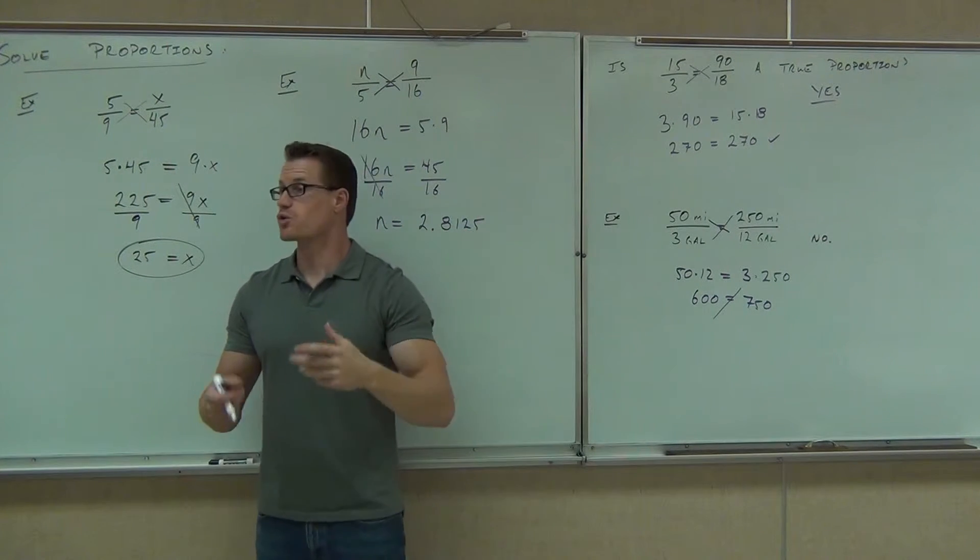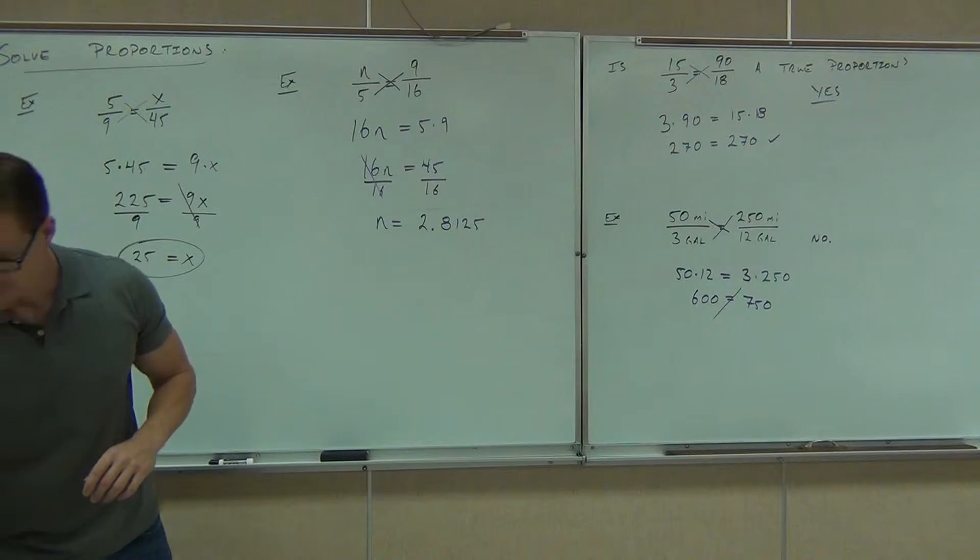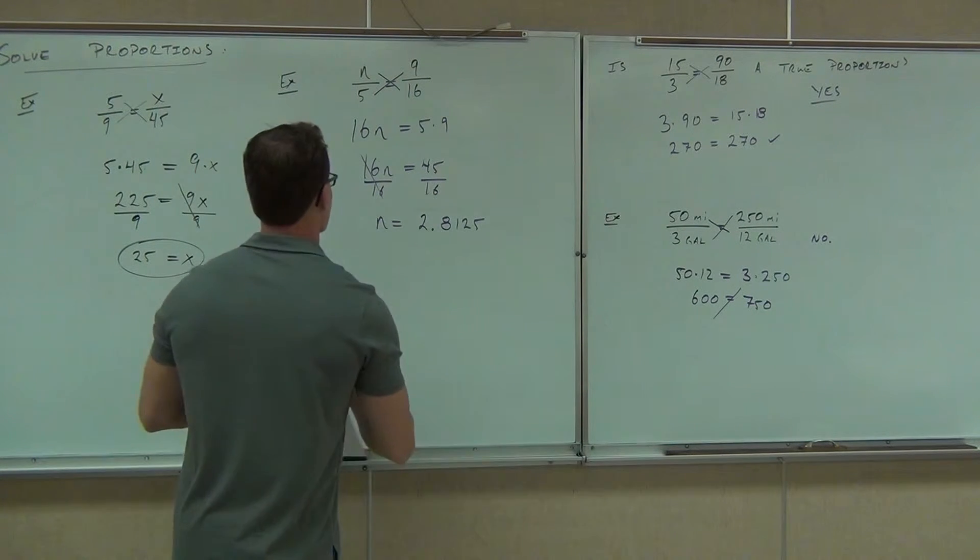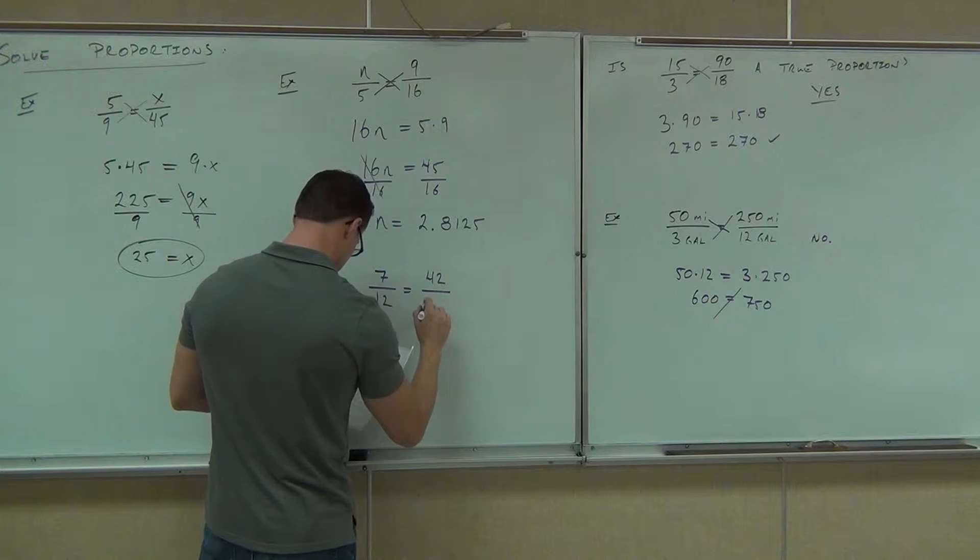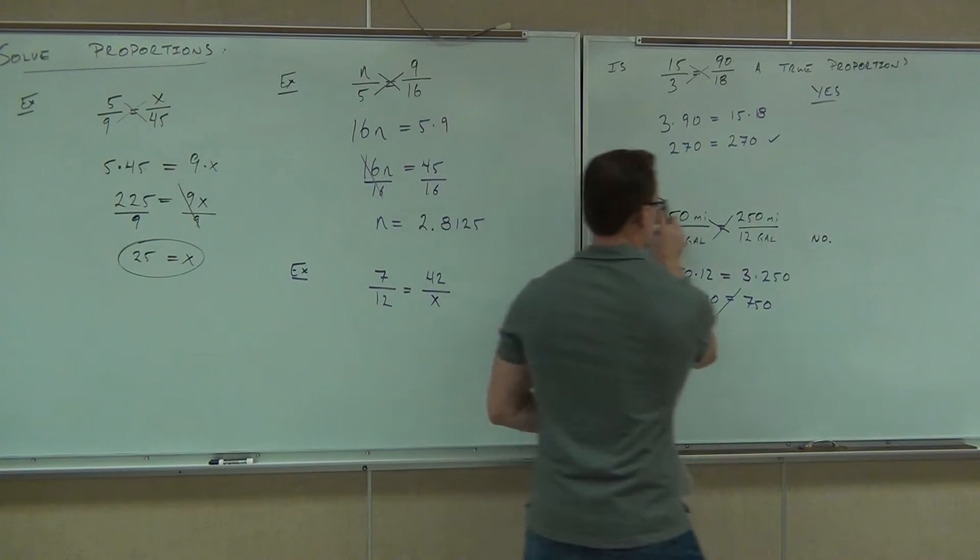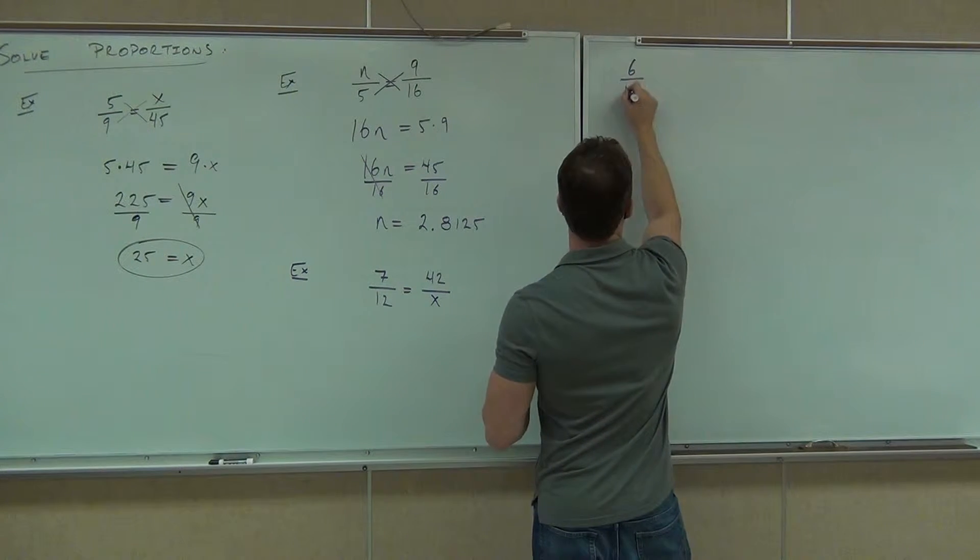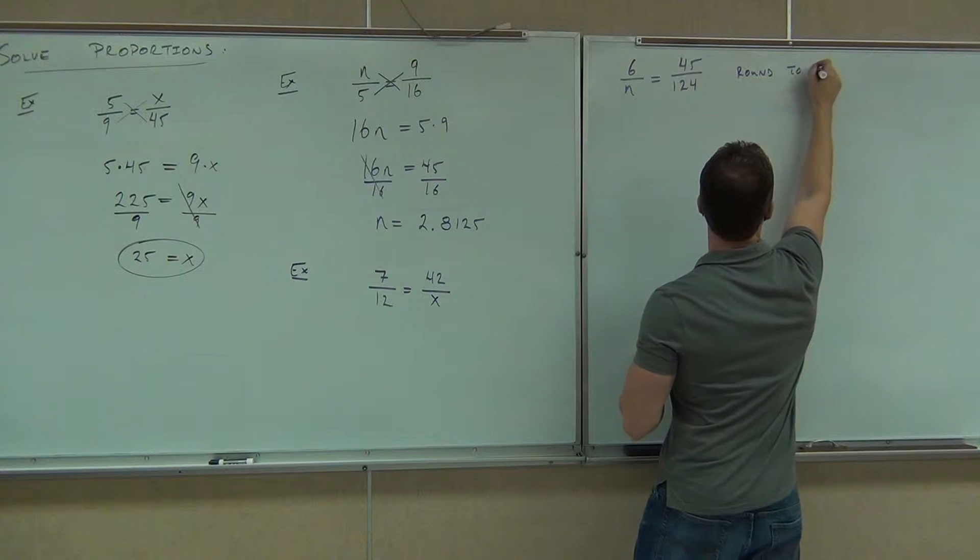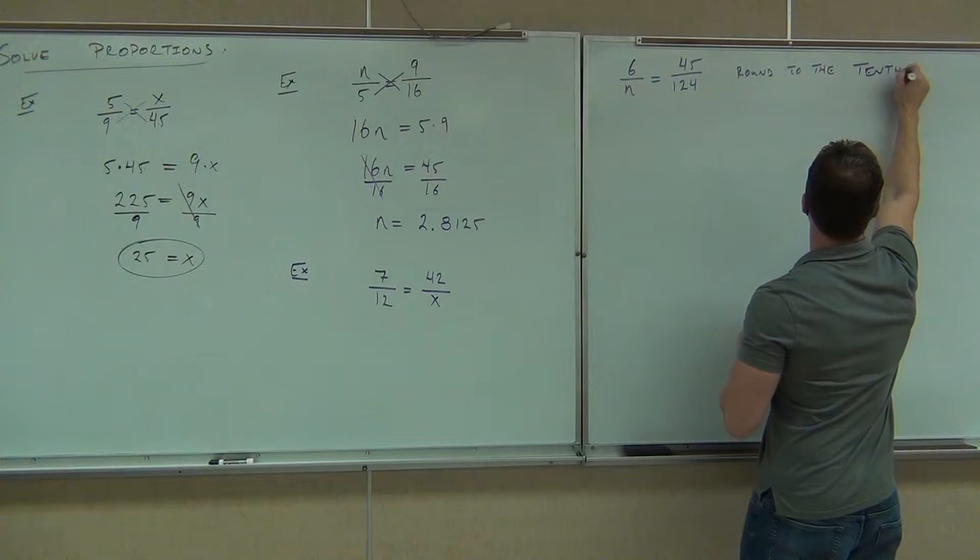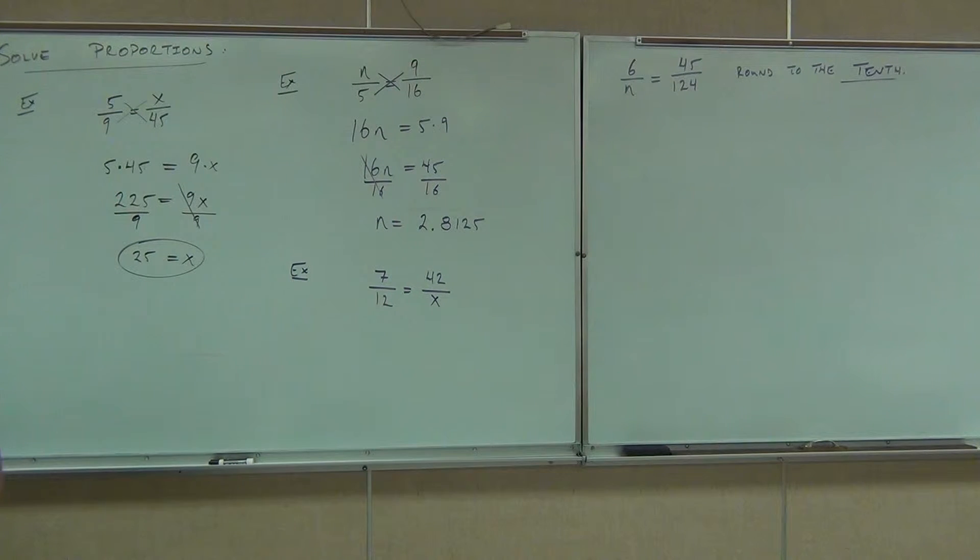Now, if this went on forever and repeated and repeated, sure, we'd be rounding it right now and we'd have the approximate symbol. Remember that approximate symbol I gave you? That's what we'd have. But if it doesn't, if it ends somewhere, make sure you put that whole thing. You ready to write you on your own? Okay, let's do this. 7/12ths equals 42 over X. Solve for X. 6 over N equals 45 over 124, and I want you to round that solution to the tenth.